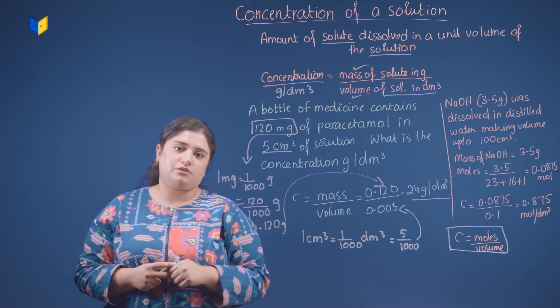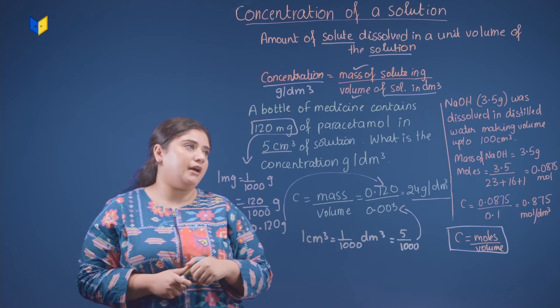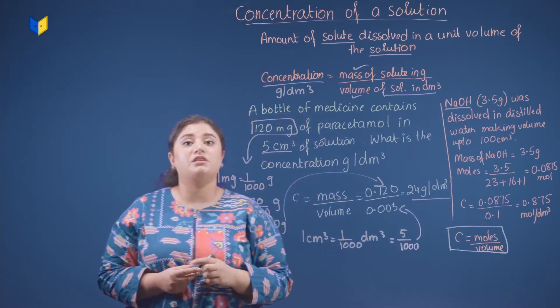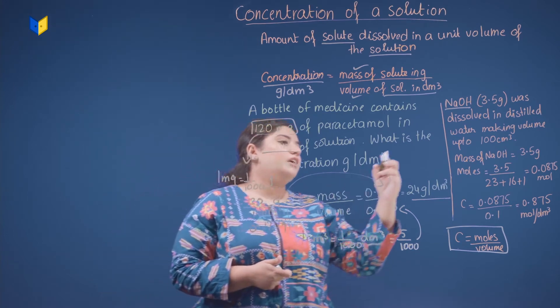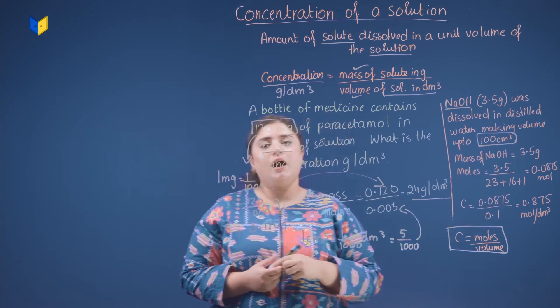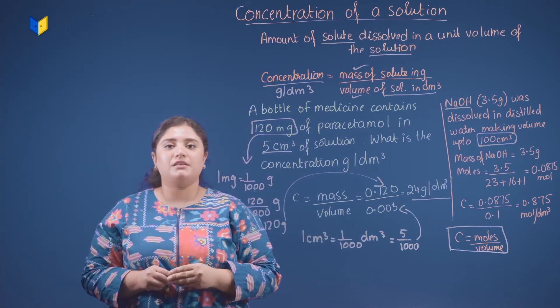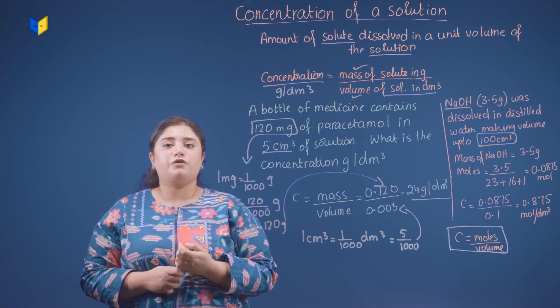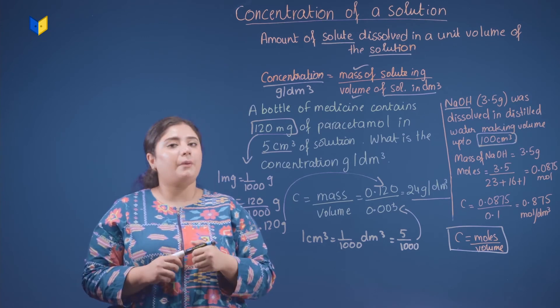Next question: NaOH, this mass is given, 3.5 grams was dissolved in distilled water making volume up to 100 cm cube. Okay? Now you have the total volume that is 100 cm cube. So what do you want to find out in this? You have to find out the concentration.